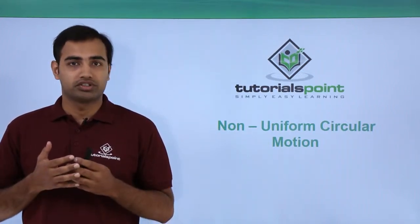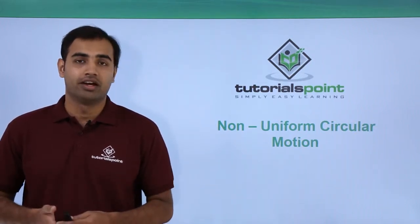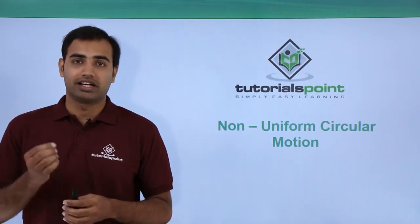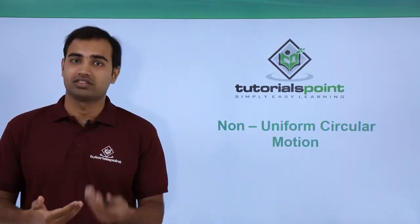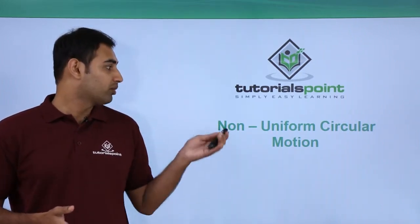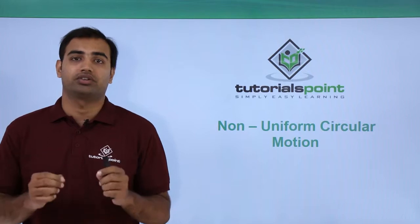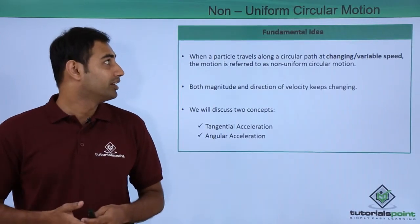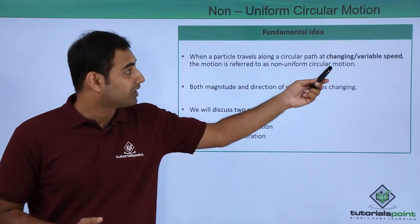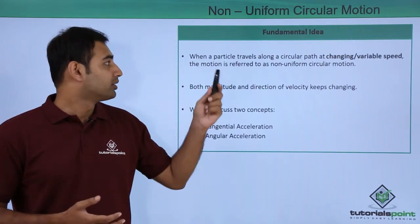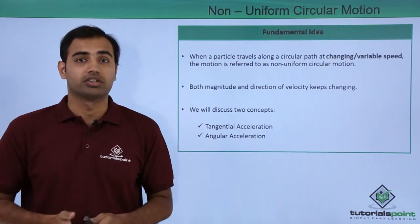In the previous two videos, we talked about the concepts of uniform circular motion where we discussed angular displacement, angular velocity, and centripetal acceleration — the acceleration that keeps an object within circular motion. If that acceleration is withdrawn, the object cannot stay in circular motion anymore. Now in this topic of non-uniform circular motion, we will talk about situations when the object is not going around at a constant speed. When a particle travels along a circular path at changing or variable speed, the motion is referred to as non-uniform circular motion, which is in complete contrast with uniform circular motion.